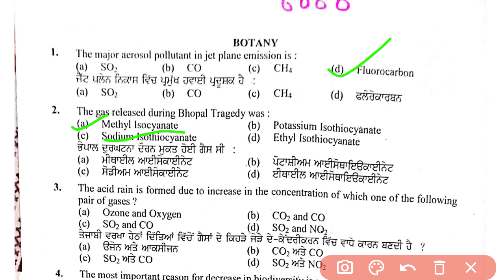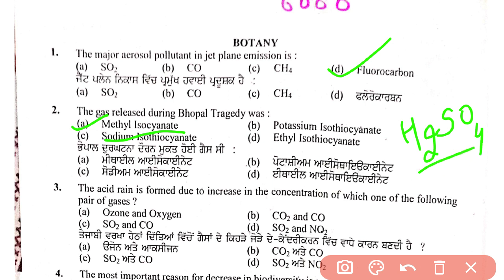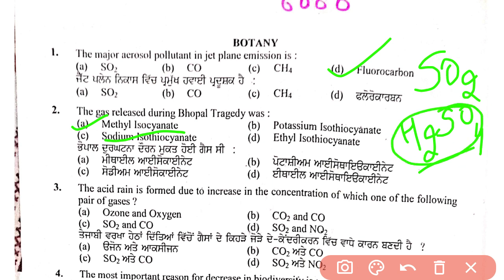Third question: acid rain is formed due to increase in the concentration of which pair of gases? Acid rain forms because of H₂SO₄ and HNO₃. H₂SO₄ forms from sulfur dioxide — when SO₂ combines with water vapor it forms sulfuric acid. Nitrogen oxide combines with atmospheric humidity to form nitric acid. So the answer is SO₂ and NO₂.